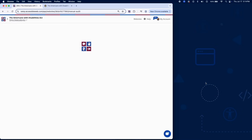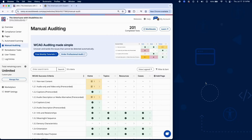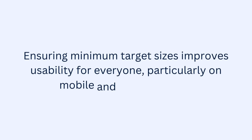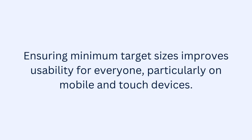And that completes testing for Success Criterion 2.5.8 using RAMP's Audit Grid and Chrome extension. Ensuring minimum target sizes improves usability for everyone, particularly on mobile and touch devices.